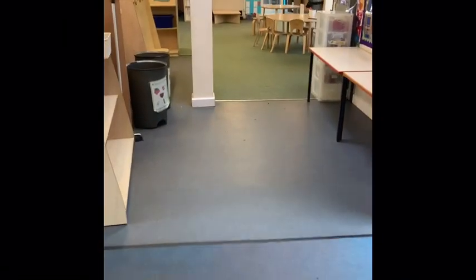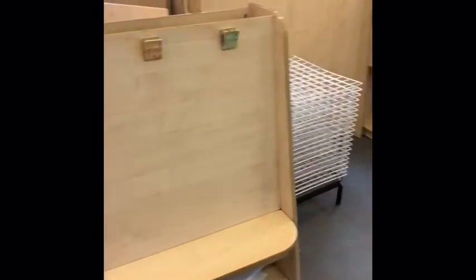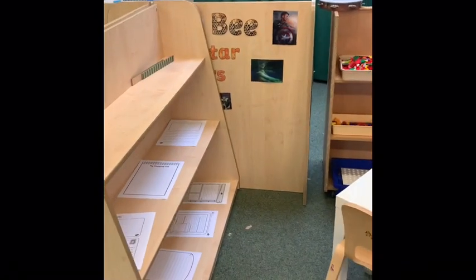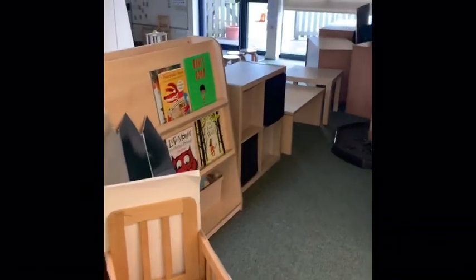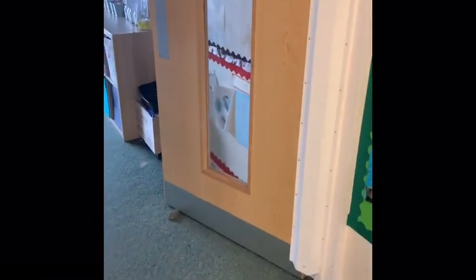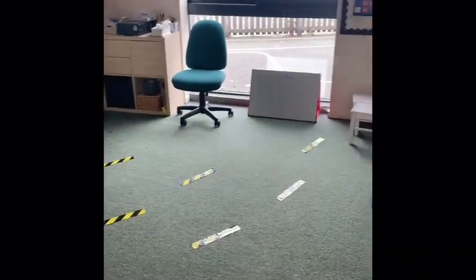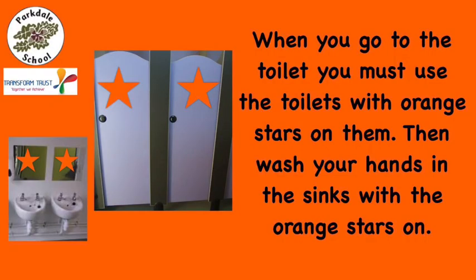In the middle there is a wall separating the space — it's just the furniture so you don't need to worry. There are all the same toys that we normally play with in reception. The only thing that's been taken out is the cushions and the throws. There are still lots of books to read, lots of writing to do, and lots of things to play with. You'll also be spending some time in our bay. There are markings on the floor so try and sit on those spots when we're in the classroom. When you go to the toilet you must use the toilets with the orange stars on them, then wash your hands in the sinks with the orange stars on too.